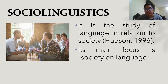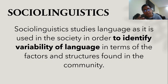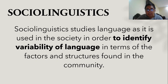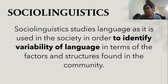We arrive at the pinnacle of society and language, which is sociolinguistics. It is the study of language in relation to society, taken from Hudson's work in 1996, and its main focus is society on language. This field studies language as it is used in society in order to identify variability of language in terms of the factors and structures found in the community. Variability in language refers to the differences in how we speak — you discover differences between your language and other people's languages, and in the way they use language.